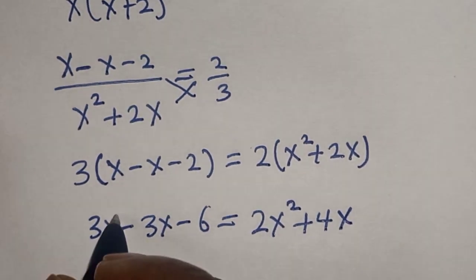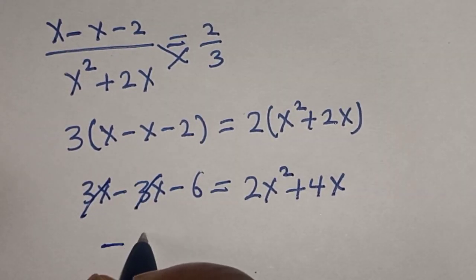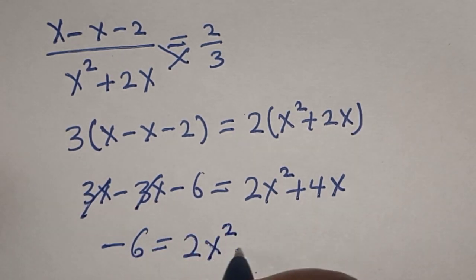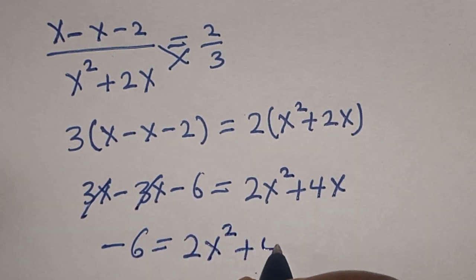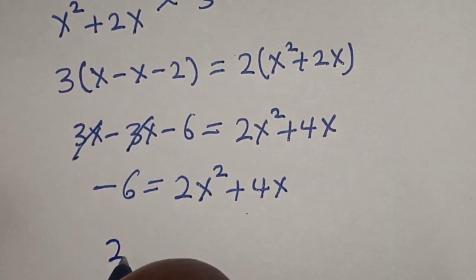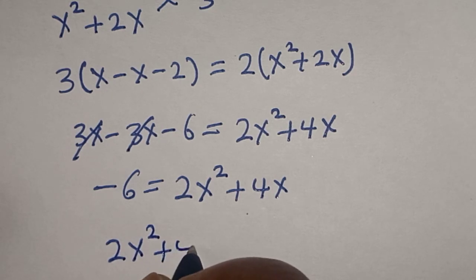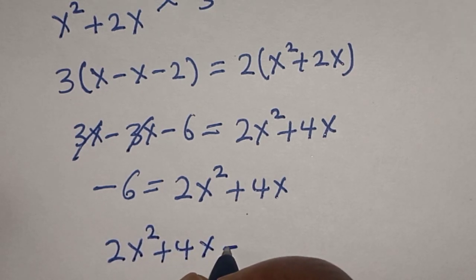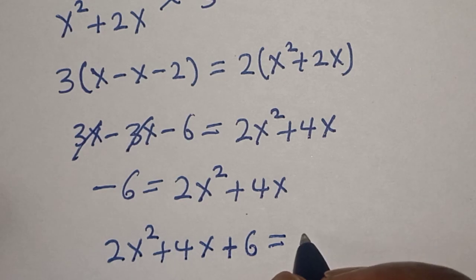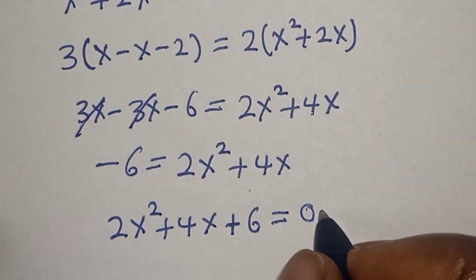This one will cancel this. So this is minus 6 is equal to 2x squared plus 4x. Let's equate everything to 0. We have 2x squared plus 4x plus 6 is equal to 0.